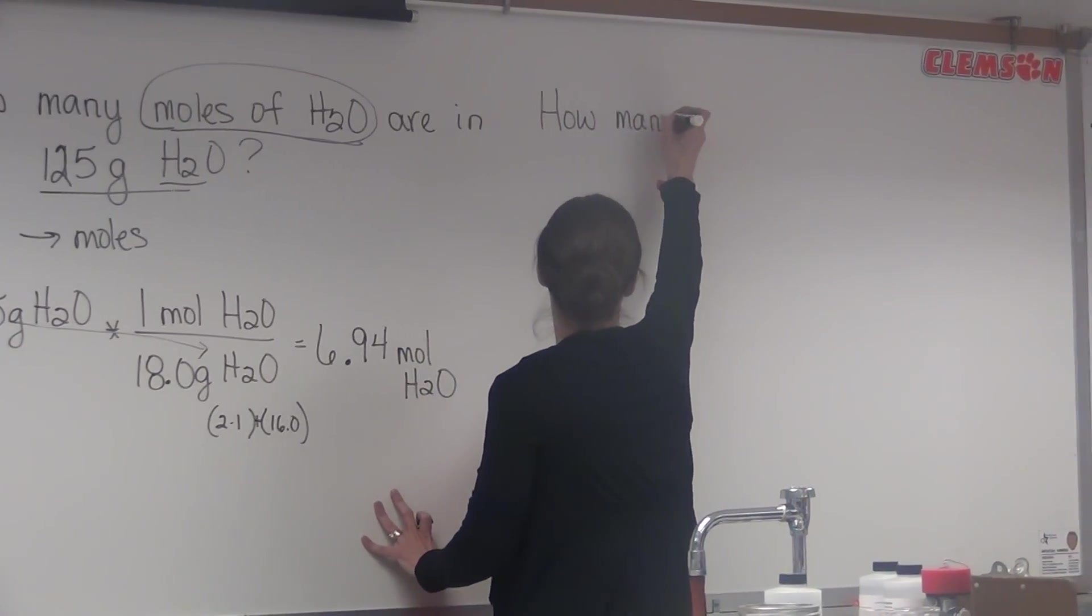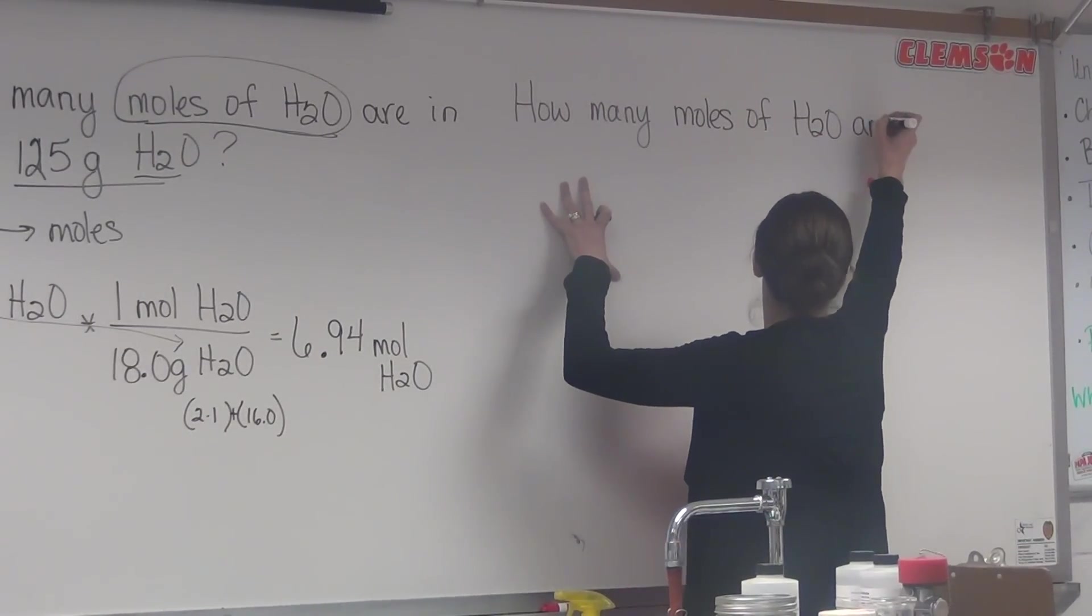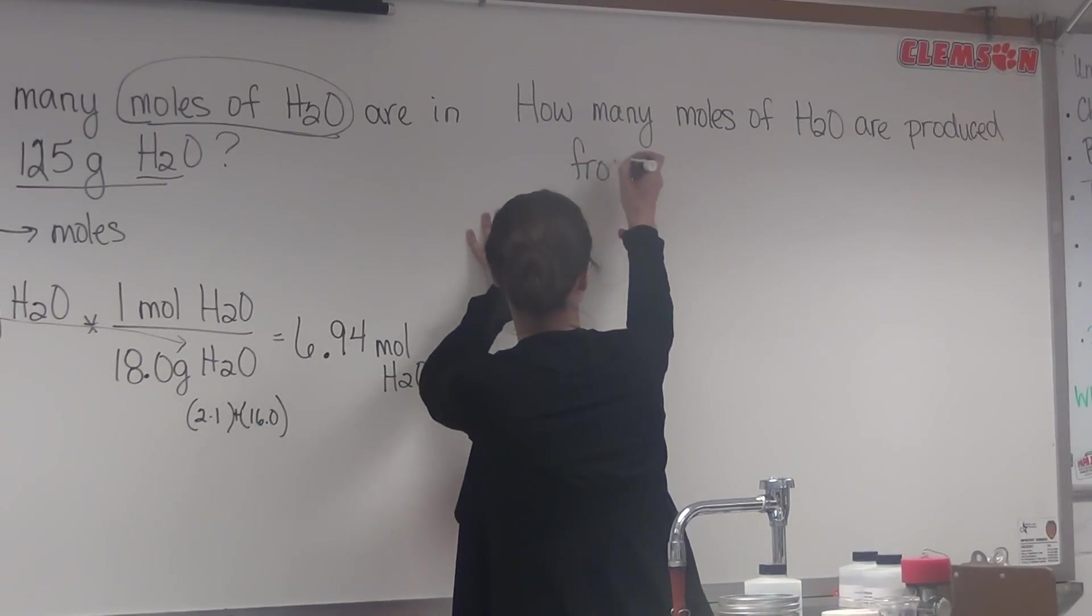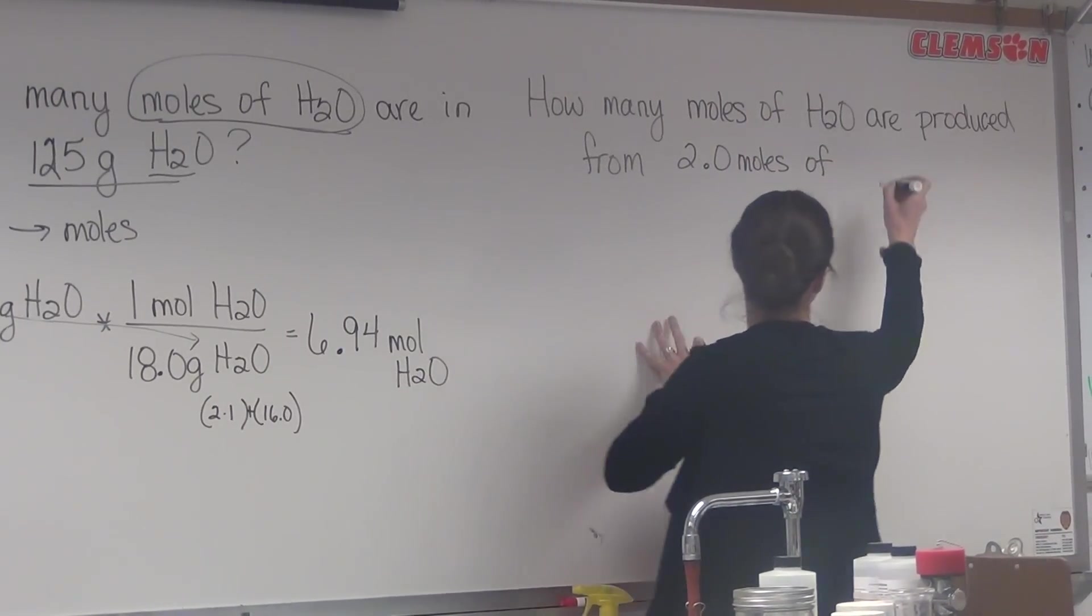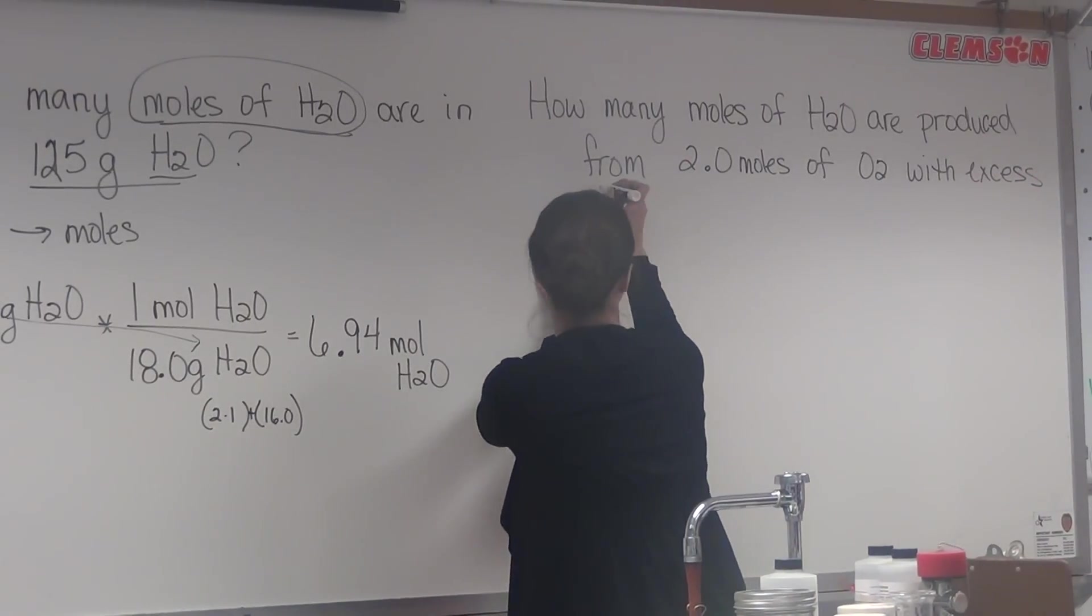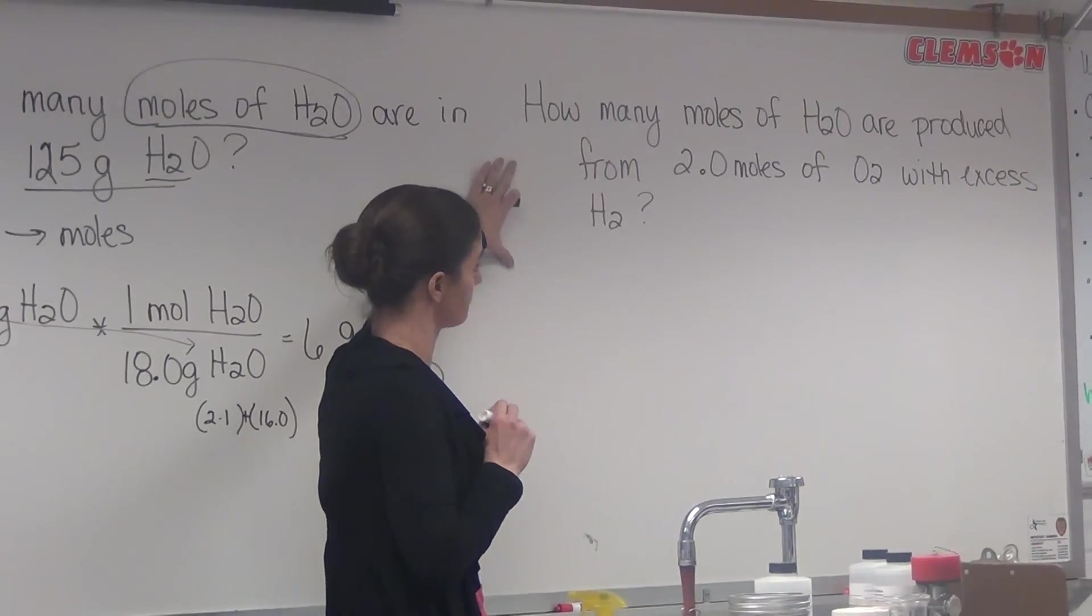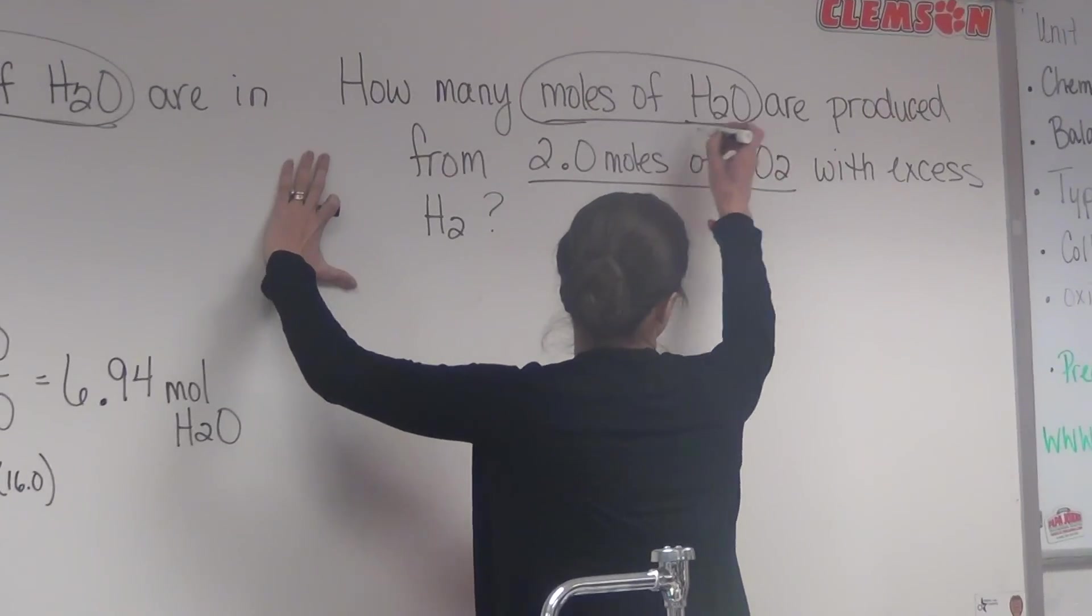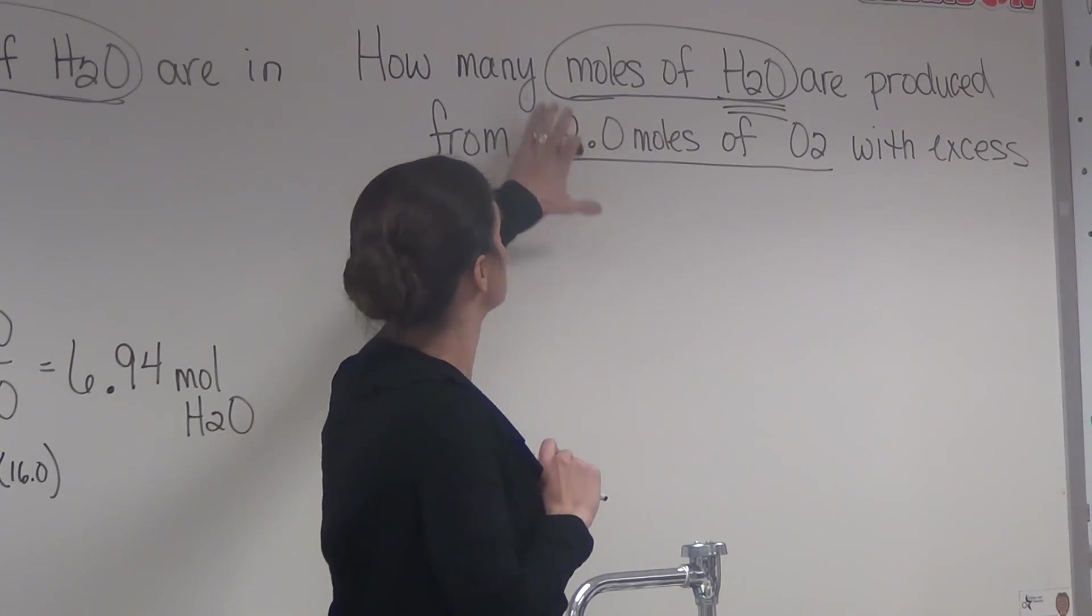How many moles of water are produced from 2.0 moles of oxygen with excess hydrogen? So in this, you should see that there's more than one substance that's mentioned. We're starting with moles of oxygen, but we're going to something different. We've got water. So now we have to figure out how to convert between one substance to another substance.